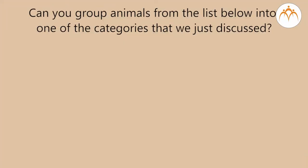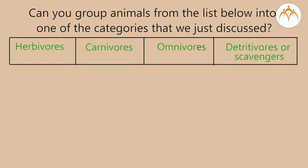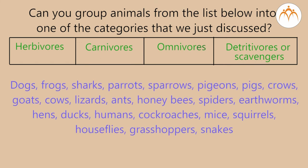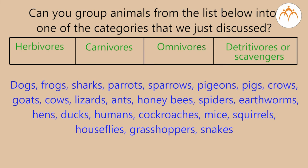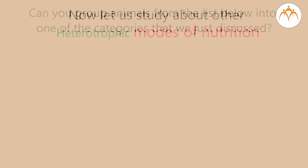Can you group the animals from the list below into one of the categories we just discussed? Dogs, frogs, sharks, parrots, sparrows, pigeons, pigs, crows, goats, cows, lizards, ants, honeybees, spiders, earthworms, hens, ducks, humans, cockroaches, mice, squirrels, houseflies, grasshoppers, snakes. Now let us study about other heterotrophic modes of nutrition.